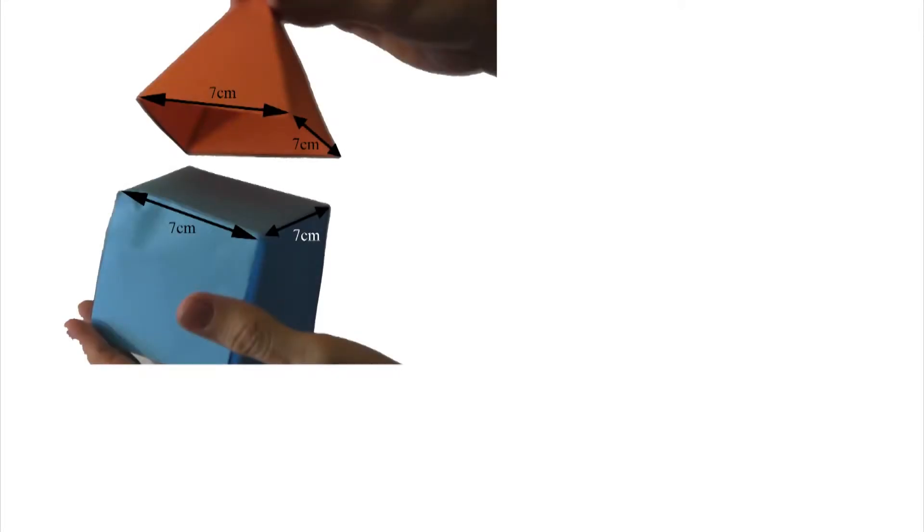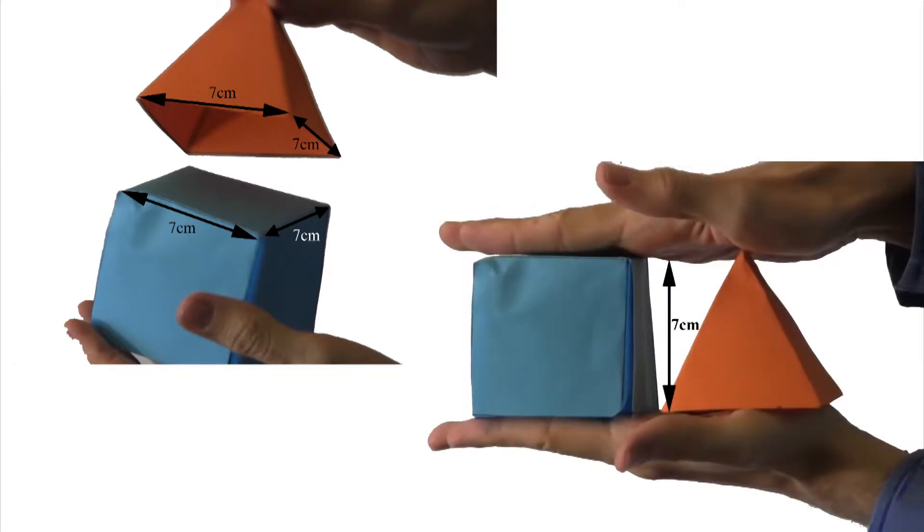I'm going to make a 7 cm cube, and then a square-based pyramid with a 7 cm by 7 cm base on the bottom. The perpendicular height of the pyramid is also going to be 7 cm.